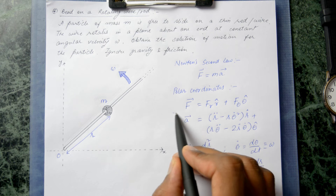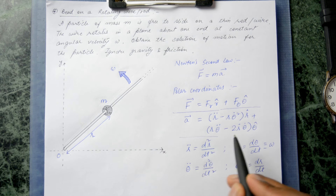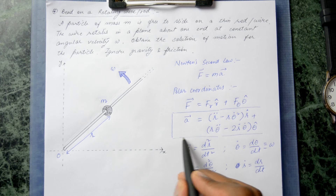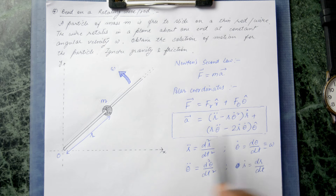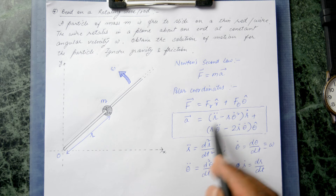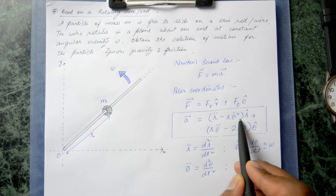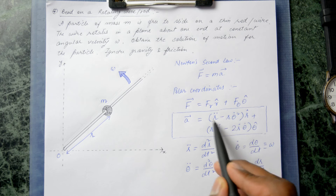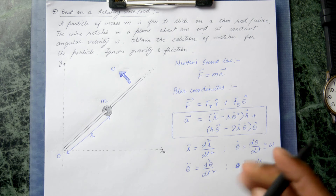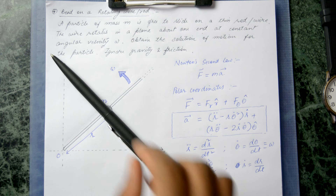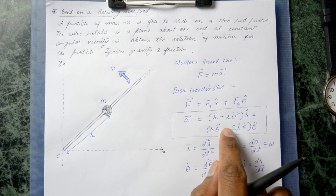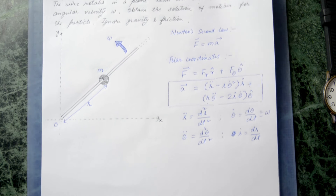This expression for acceleration in polar coordinates is a standard result. I'm not going to spend time deriving it, but if you take any standard mechanics book discussing kinematics, you will find this expression. The coefficient of R̂ is the radial acceleration, and the coefficient of θ̂ is the acceleration along the tangential direction.